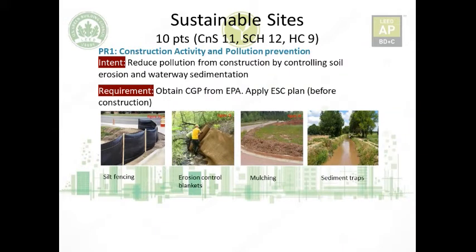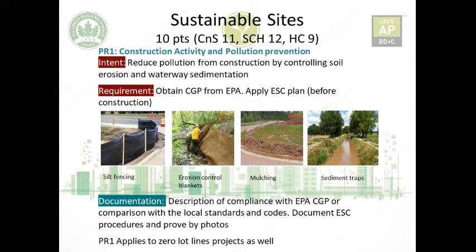Control measures include silt fencing, erosion control blankets, mulching, and sediment traps where contaminated water is collected and then drained by pumps. The documentation to submit for this prerequisite is compliance with the EPA Construction General Permit, or a local equivalent, along with documented erosion and sedimentation control procedures proven with photos. This is a prerequisite — it cannot be skipped — it is mandatory if you want to apply for LEED, and it applies to zero lot line projects as well.